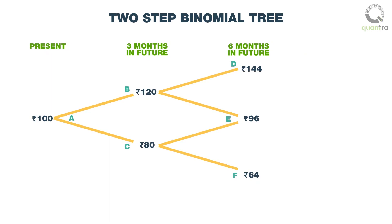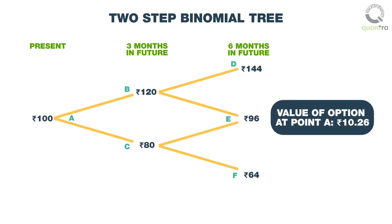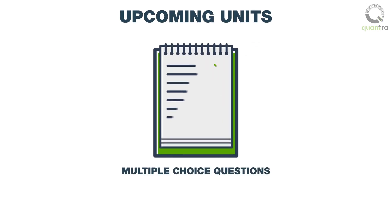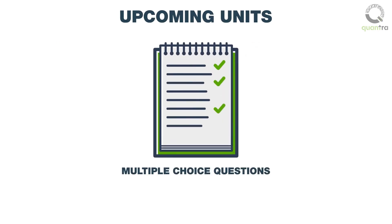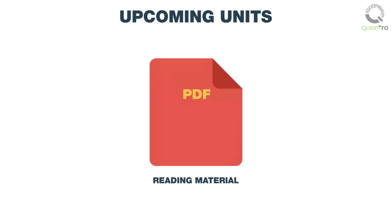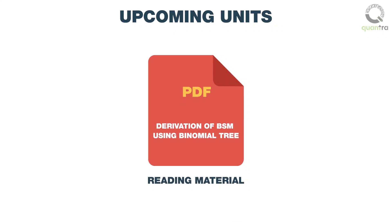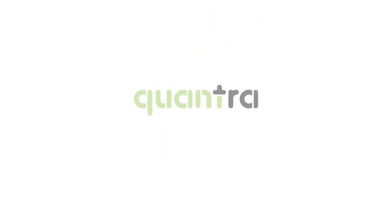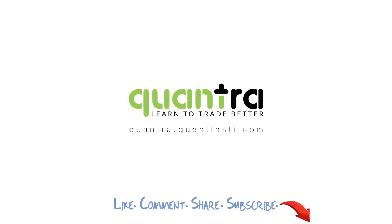Applying this methodology, the fair value of the option is computed to be 10 rupees and 26 paise. You can try this as an exercise by computing the values yourself. In the upcoming units, there will be a couple of multiple-choice questions to test your understanding of binomial trees, followed by reading material on the derivation of BSM using binomial trees, and another reading unit on Wiener process and Ito's lemma.